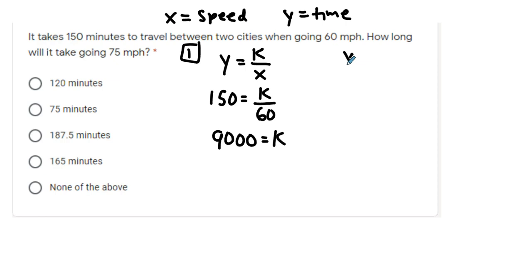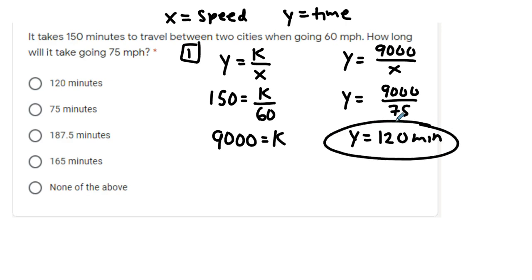Then use that to write your equation, and then you can use this equation to solve for any scenario that involves these two cities. If you put 75 miles per hour in for x and divide, you should end up getting 120, and this is measuring minutes. So 120 minutes.